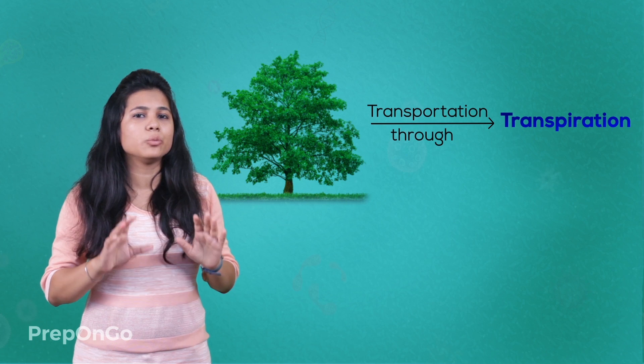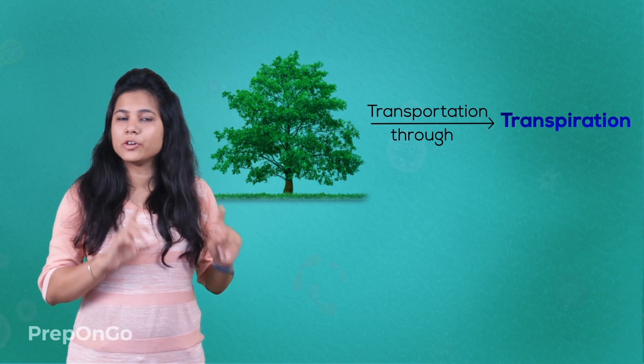Transpiration occurs simultaneously with photosynthesis. When photosynthesis occurs, the stomatal pores get opened, and there is a loss of water. The amount of water lost must be compensated by the water in the roots, developing a pressure. There is also evaporation of water from the leaf surface, which creates a suction that develops pressure to pull water upwards, so water reaches the leaves and other parts of the plant, helping photosynthesis.